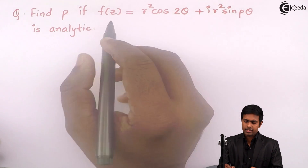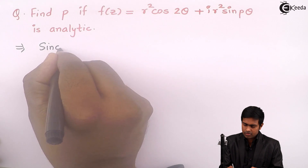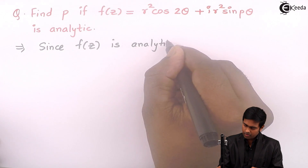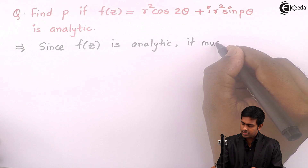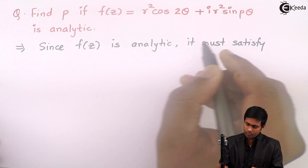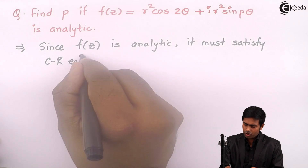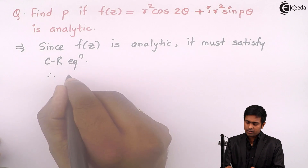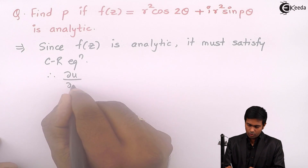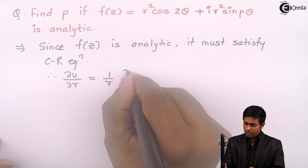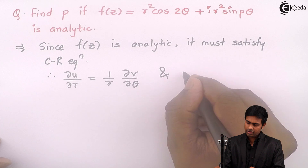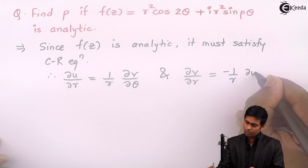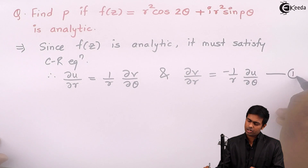Since f of z is analytic, it must satisfy the CR equations, that is the Cauchy-Riemann equations. So therefore the CR equations are: ∂u/∂r = (1/r)(∂v/∂θ) and ∂v/∂r = −(1/r)(∂u/∂θ). I will label this as equation number 1.